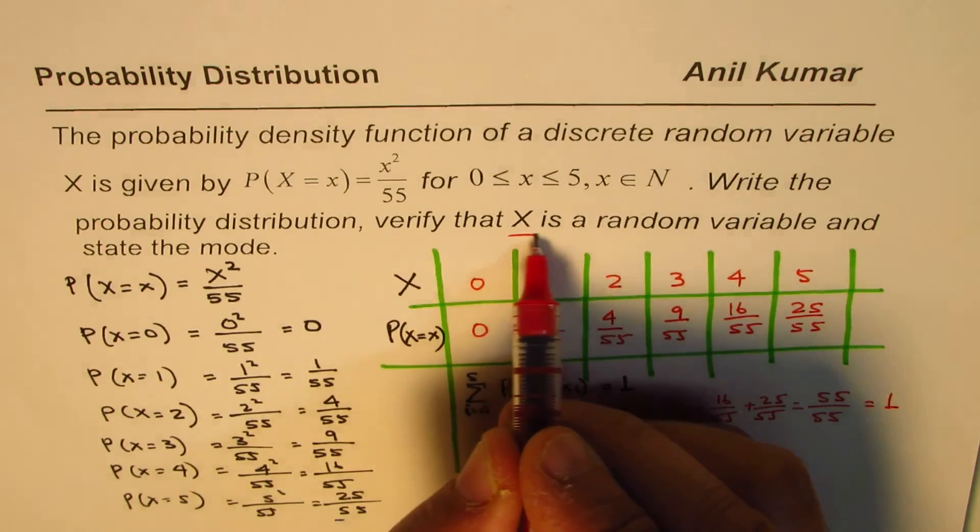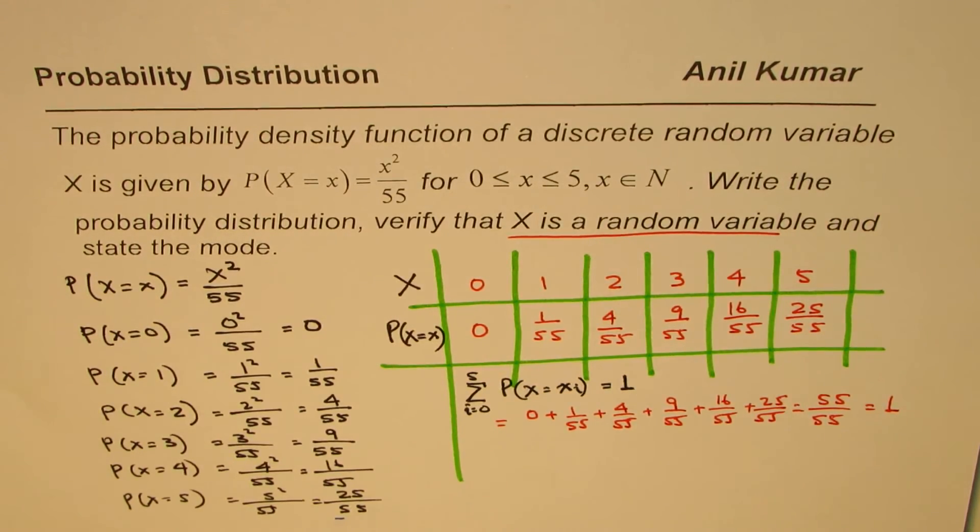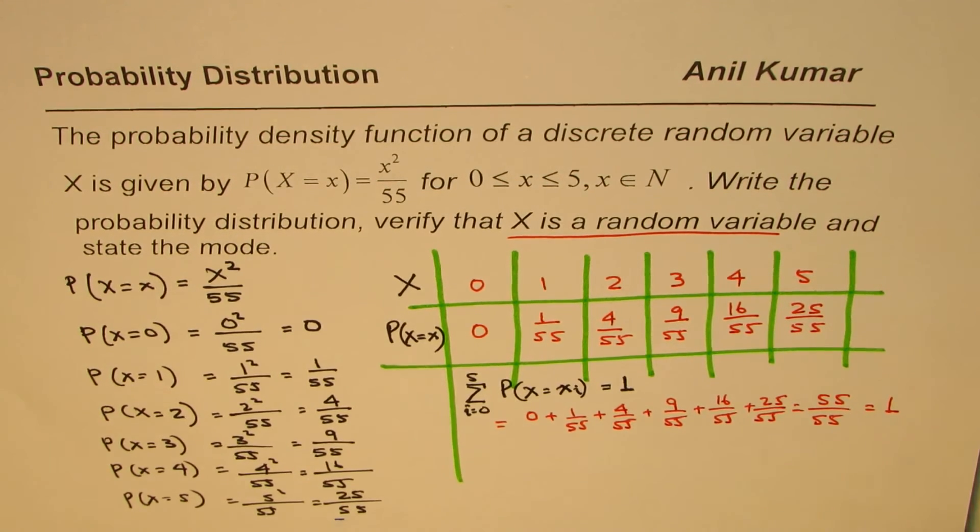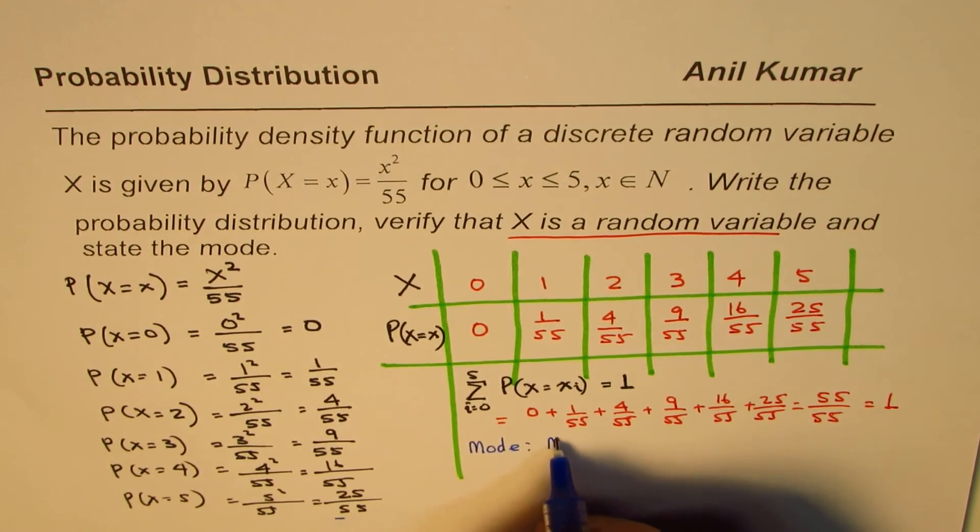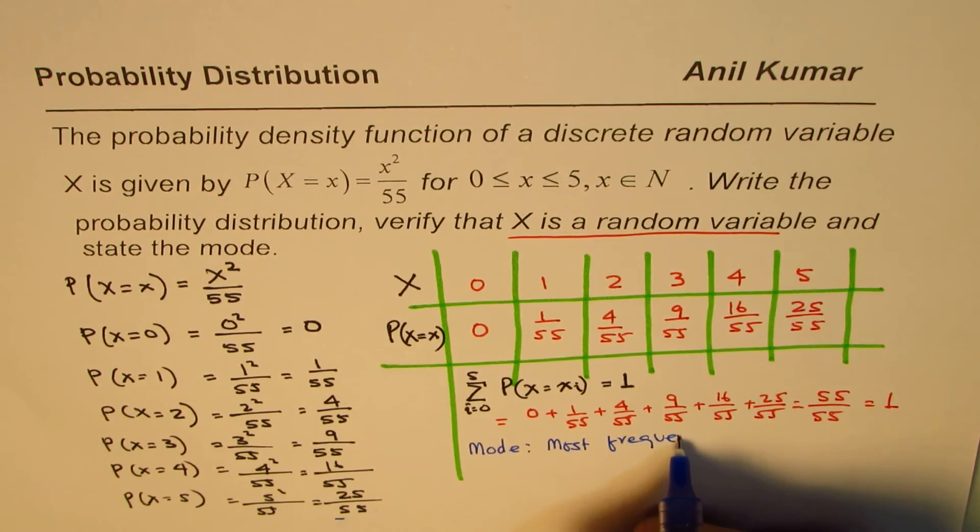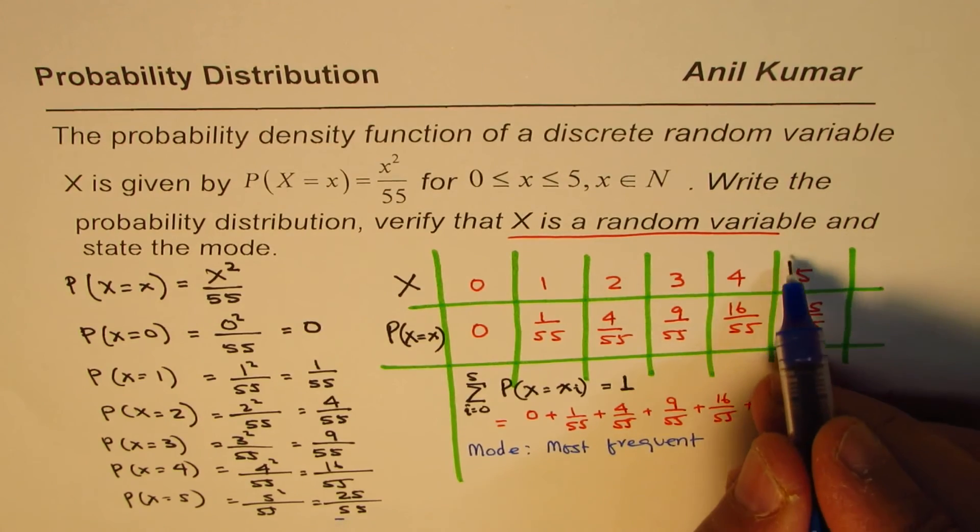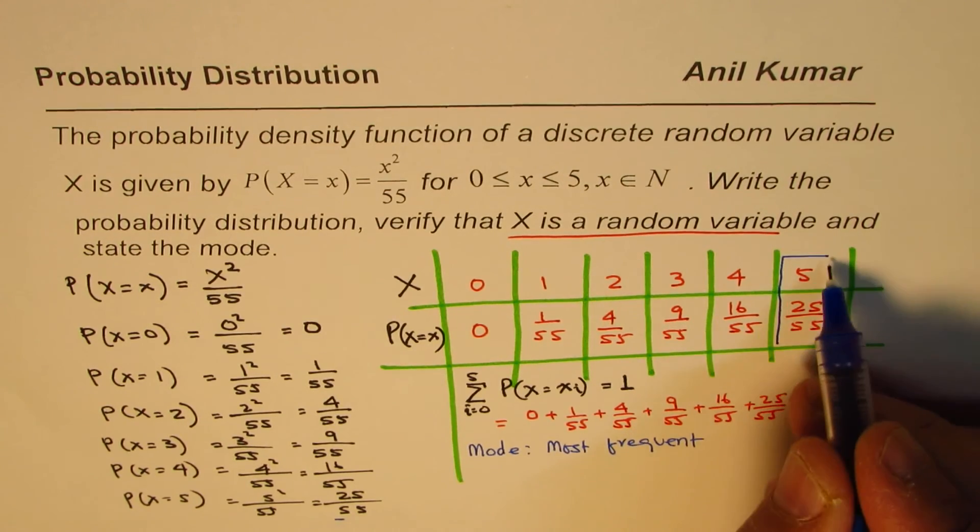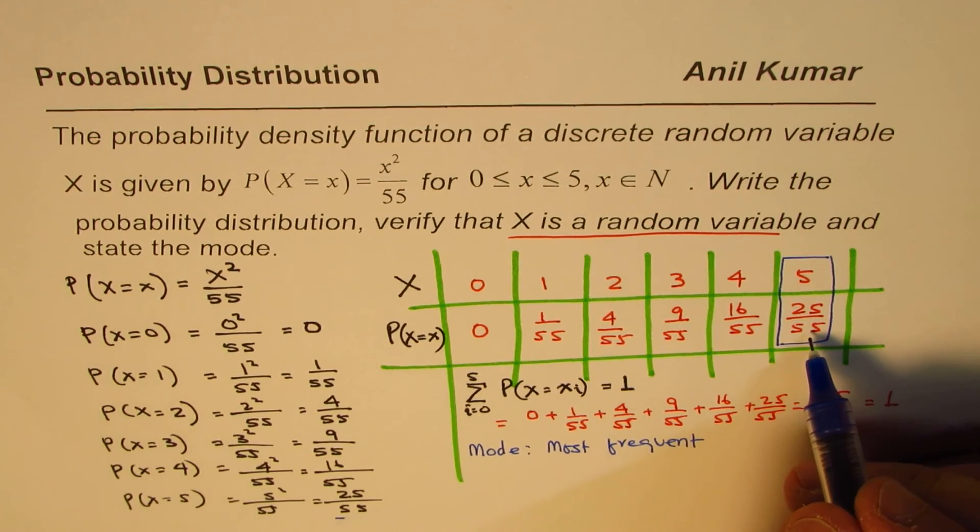So that part we've done. X is a random variable, and now we have to state the mode. Mode is most frequent. So let's talk about mode now. Mode is most frequent, so the highest probability. In this case, most frequent is 5, since the probability is 25/55.